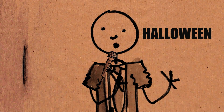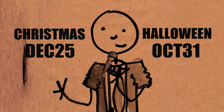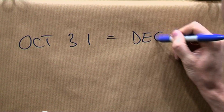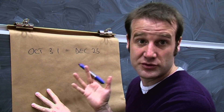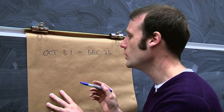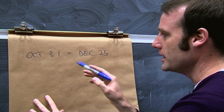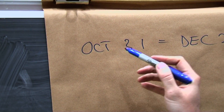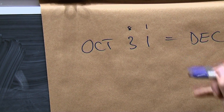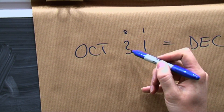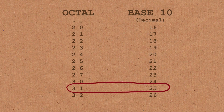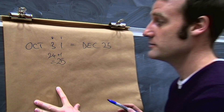Why do mathematicians confuse Halloween and Christmas? Because Oct 31 equals Dec 25. The surface reading is that Oct stands for October and Dec for December. But Oct can stand for the 8th thing — October was the 8th month before Julius Caesar changed it, and Dec was the 10th. So instead, use Oct to mean base 8. 31 in base 8 gives you a units column and an 8's column: 3 eights is 24, plus 1, equals 25. So 31 in base 8 equals 25 in base 10 — which is why a mathematician would confuse them.